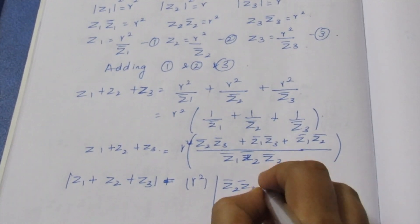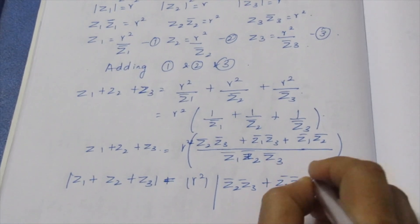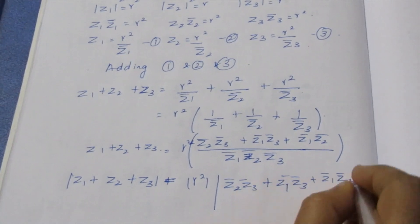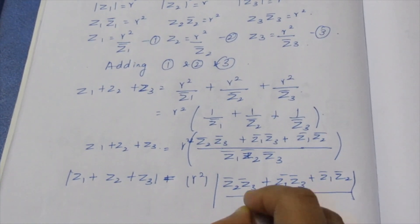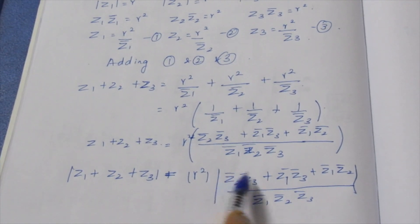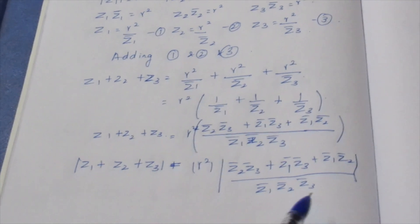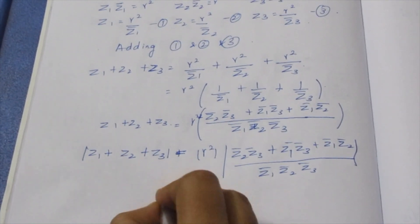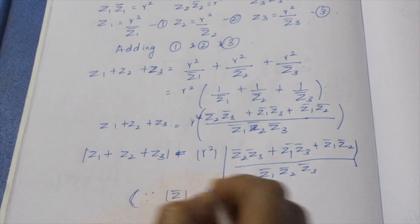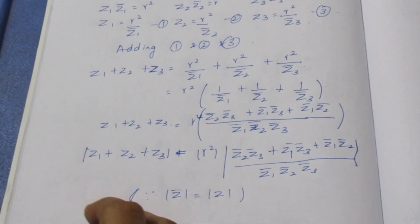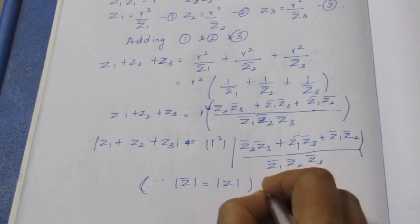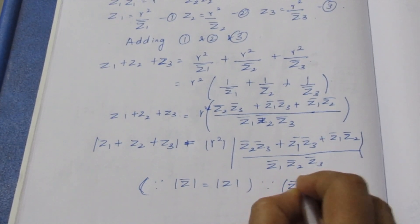The modulus of (Z1 plus Z2 plus Z3) equals R squared times modulus of (Z2·Z3-bar plus Z1·Z3-bar plus Z1·Z2-bar) divided by (Z1·Z2·Z3-bar). Using the property that the modulus of a conjugate equals the modulus of the original, Z1-bar plus Z2-bar equals modulus Z1 plus Z2.